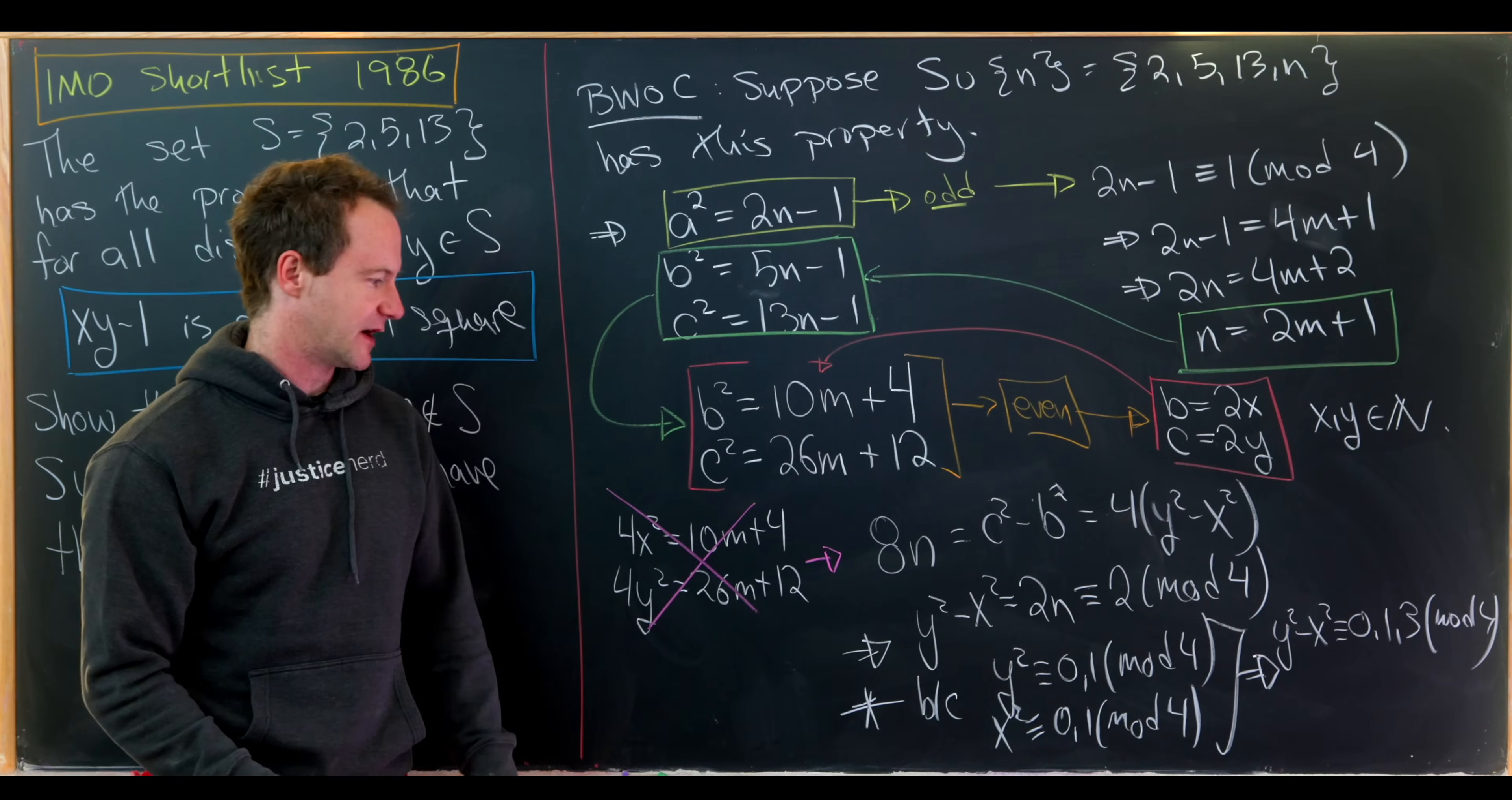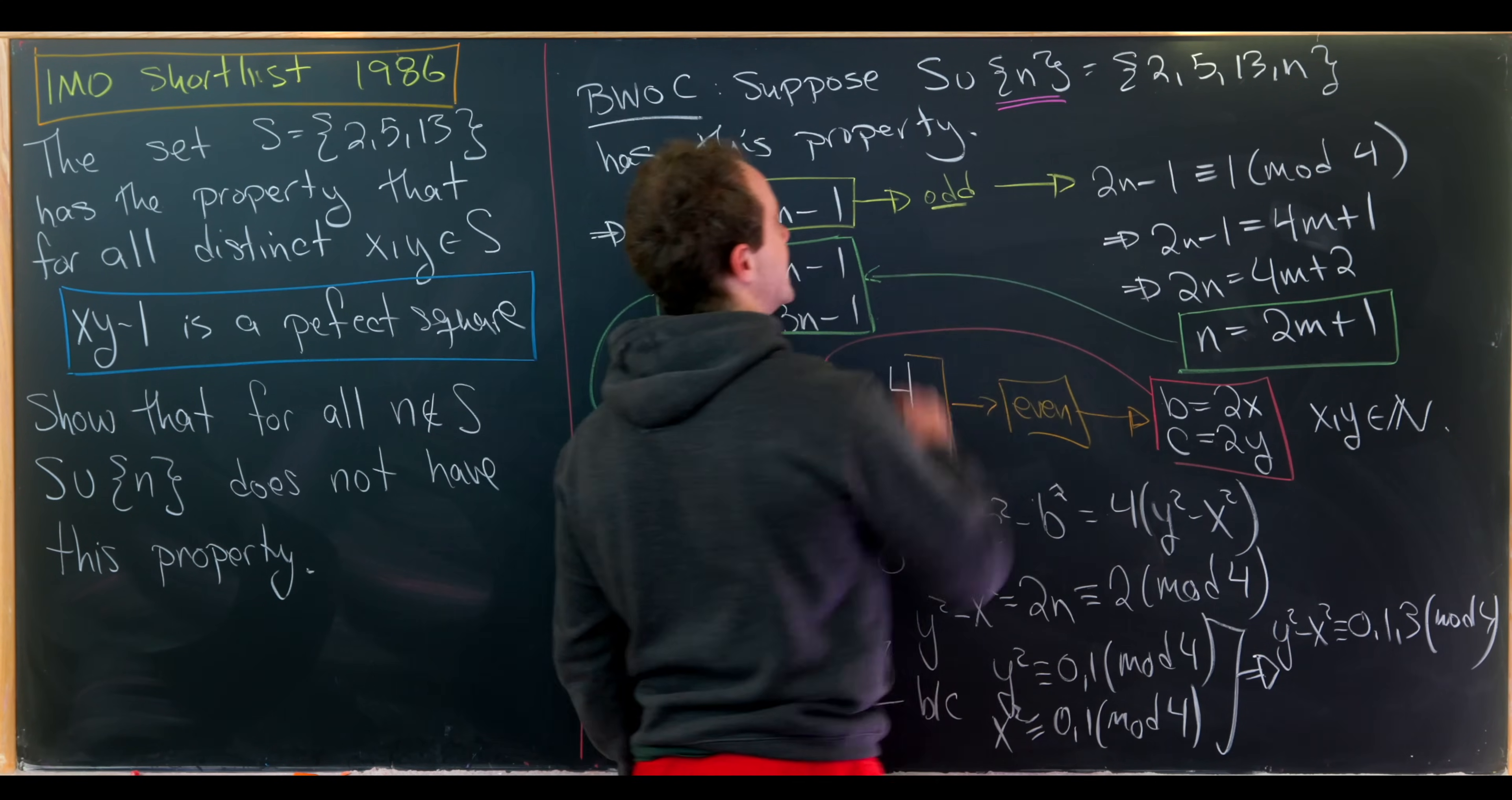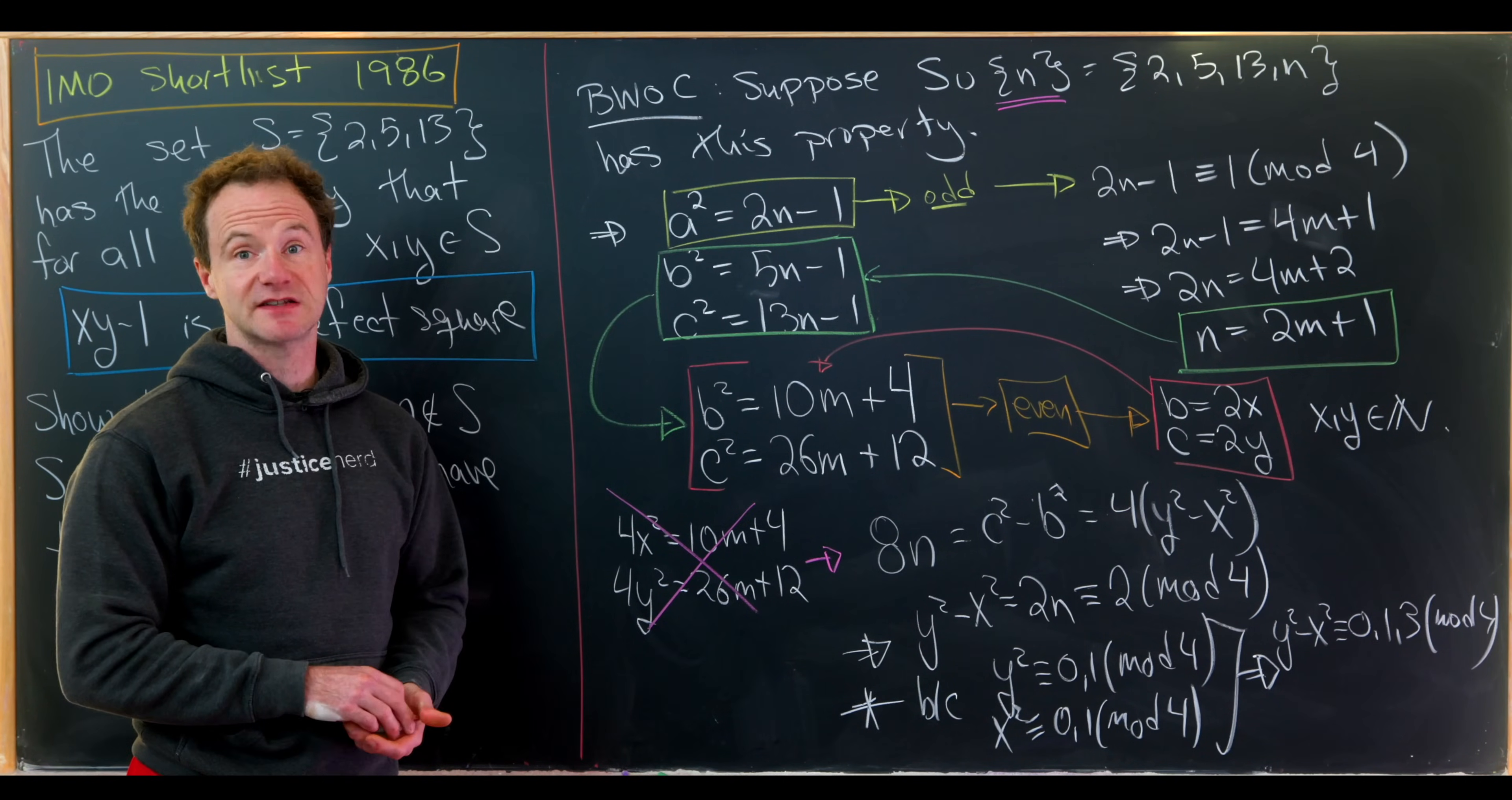But never 2 mod 4, like I pointed out. But that's our contradiction. So what did we contradict? We contradicted the fact that such an n that made this set have this property existed, so no such n must exist. And that's a good place to stop.